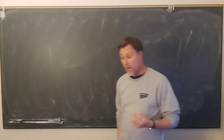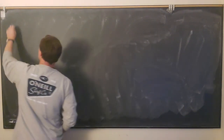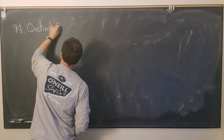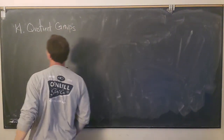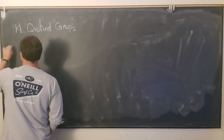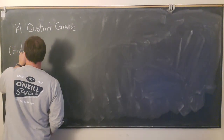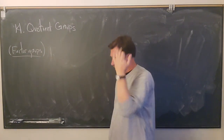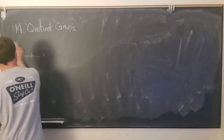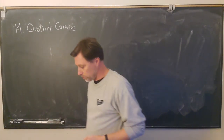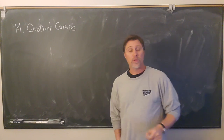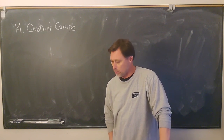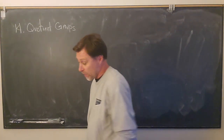Hey everyone, we are starting a new chapter today — chapter 14: quotient groups. Some authors, maybe even your book, call them factor groups. Just be aware that if you see 'factor group,' it means exactly the same thing as a quotient group. We're really getting into the heart of group theory and really algebra. This idea of quotient is one of the key constructions, one of the most important concepts in abstract algebra.